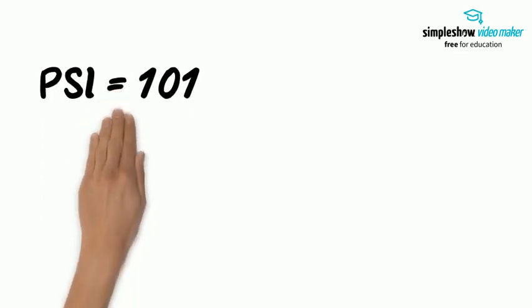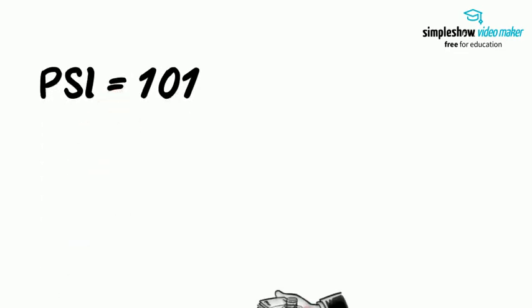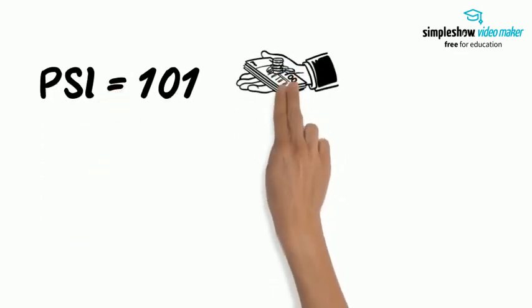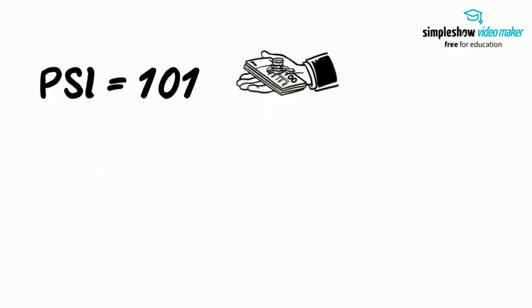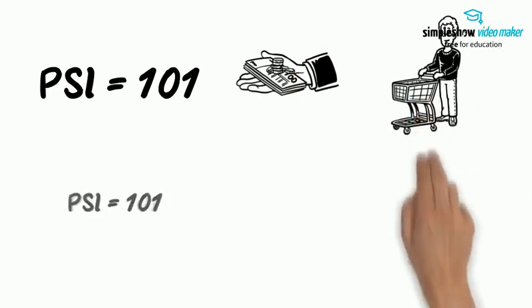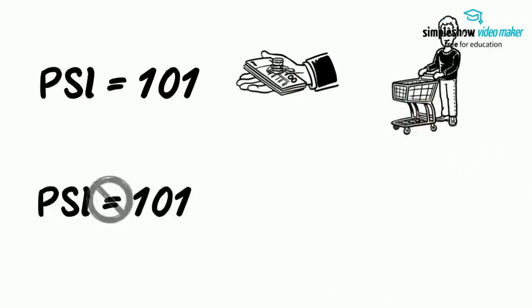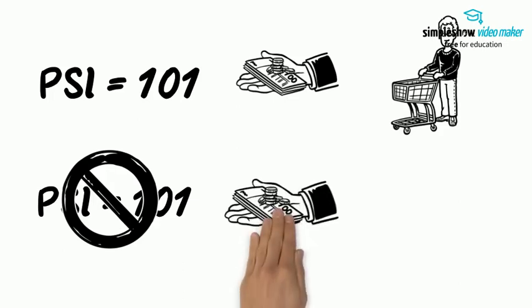If PSI reached 101 unhealthy levels, the notional payment would be triggered to the buyer. If such level was not reached until due maturity on the 24th of April 2021, the notional payment would then be triggered to the seller.